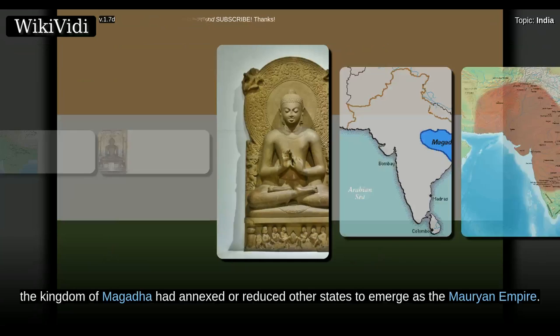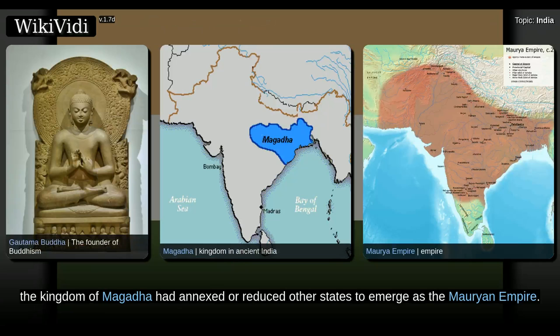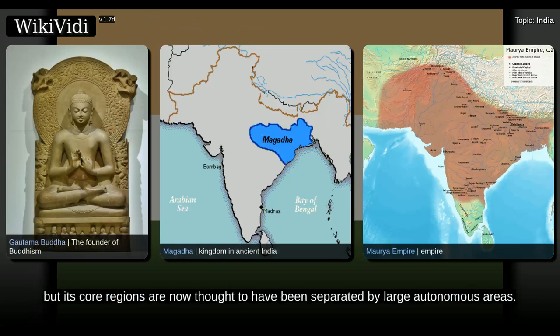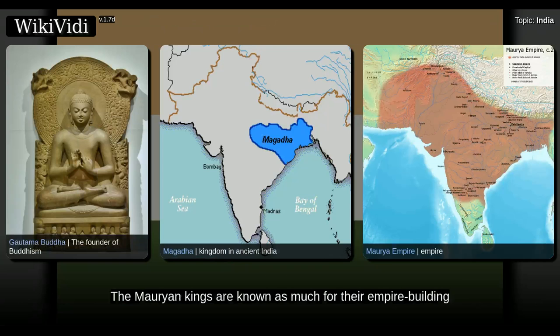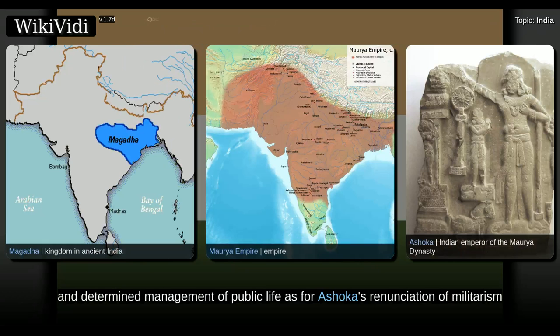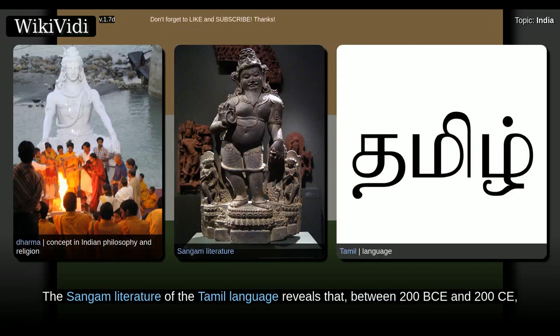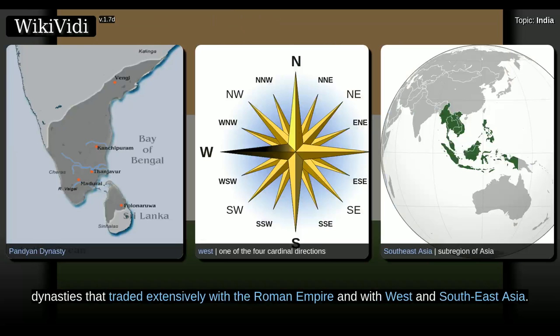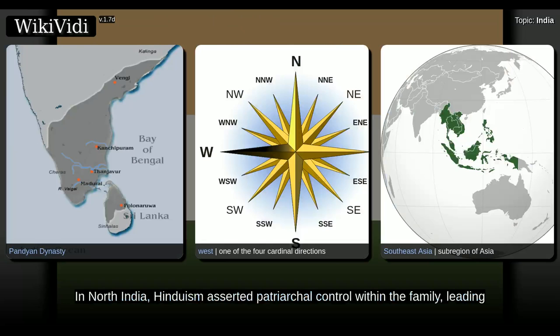By the 3rd century BCE, the Kingdom of Magadha had absorbed other states to emerge as the Mauryan Empire. The empire was once thought to have controlled most of the subcontinent excepting the far south, but its core regions are now thought to have been separated by large autonomous areas. The Mauryan kings are known for their empire-building and Ashoka's renunciation of militarism and advocacy of the Buddhist Dharma. The Sangam literature of the Tamil language reveals that between 200 BCE and 200 CE, the southern peninsula was being ruled by the Cheras, the Cholas, and the Pandyas, dynasties that traded extensively with the Roman Empire and with western Southeast Asia. In North India, Hinduism asserted patriarchal control within the family, leading to increased subordination of women.